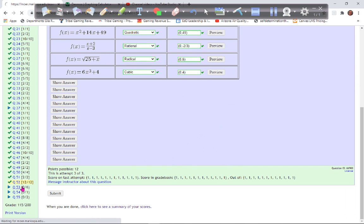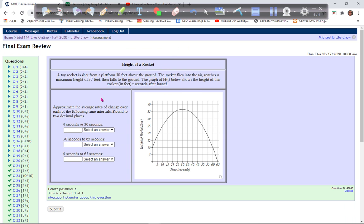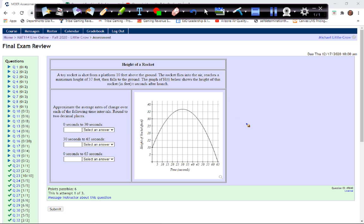Let's look at number 53. Now we've got the height of a rocket, sort of an applied problem. We really just need to be able to read from this graph approximately the average rates of change over each of the following time intervals. Round your answers to two decimal places. So from zero to 30 seconds, that's from here to here. What we look at is what are the y values - there's this one to here. So I could pull out those points and I've got to do sort of approximates.